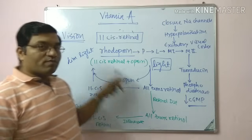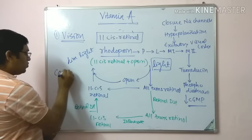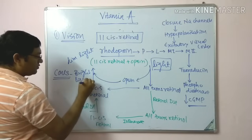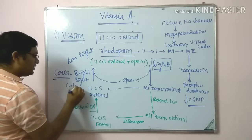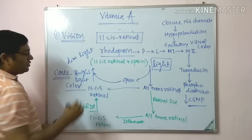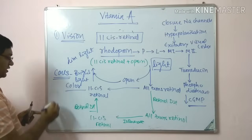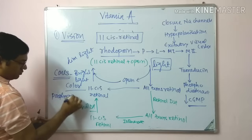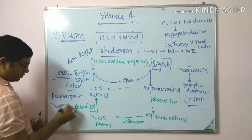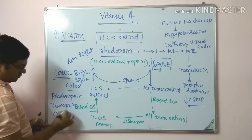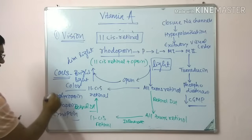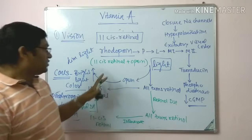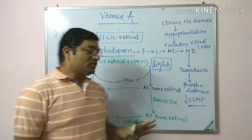Opsin is also present in the cones. Cones are responsible for bright light vision and color vision. There are three pigments present in the cones: porphyropsin, iodopsin, and cyanopsin — the red, green, and blue pigments responsible for color vision. This is how vitamin A is responsible for vision.